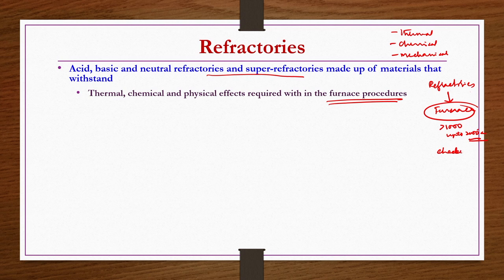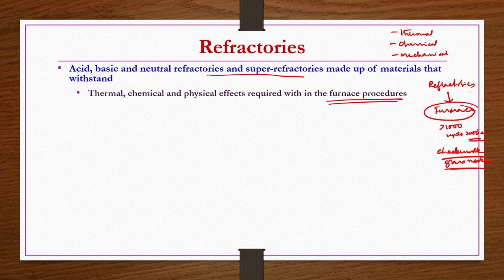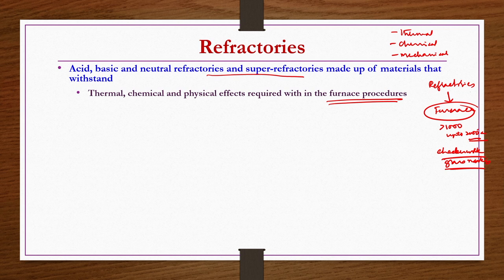One example is checker work refractories used in glass making industries. In these furnaces, different types of raw materials are melted by applying heat, often supplied by fuel gases. When fuel gases burn in the presence of oxygen, different types of gases may be produced, along with slags and molten products. Load is also essential because glass making is mostly done in batches, so mechanical strength is also required.